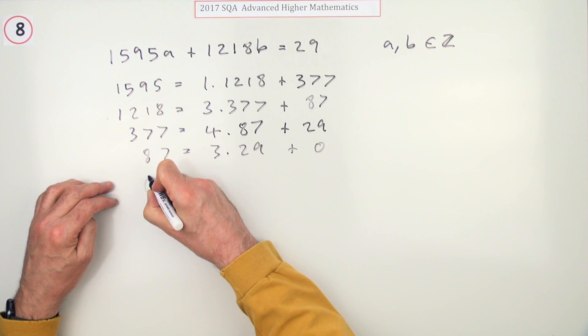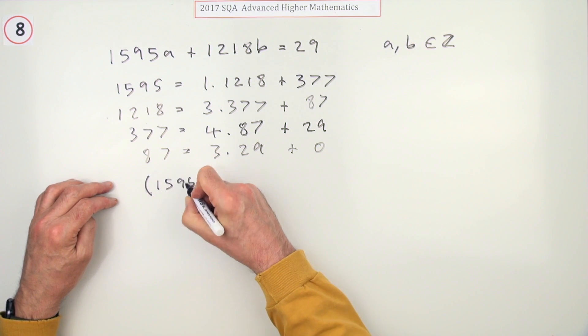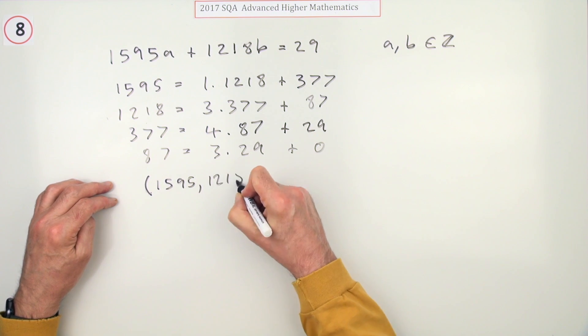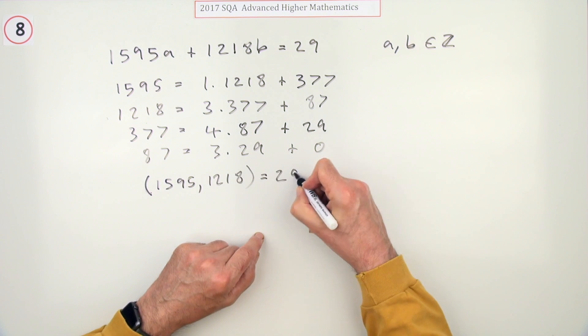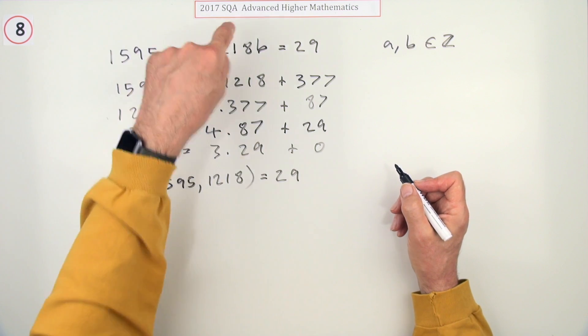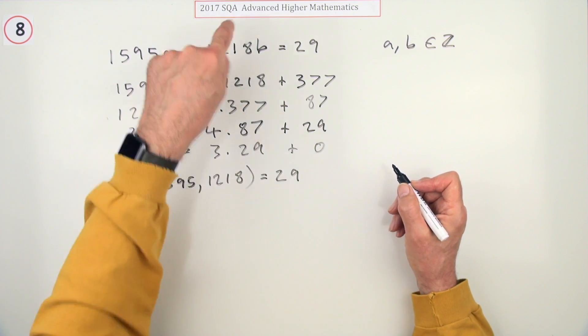Using this bracket notation: (1595, 1218) - greatest common divisor is 29. 29 divides into both of them. That's the biggest number that will divide into them both.